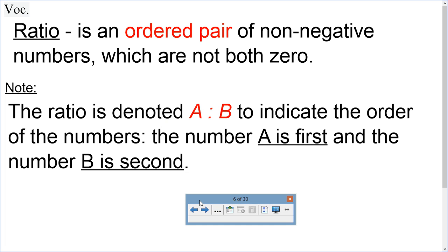First, the vocabulary word is ratio. Ratio is an ordered pair of non-negative numbers, which are not both zero. So, they both can't be zero.